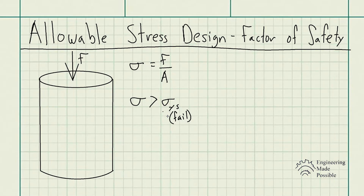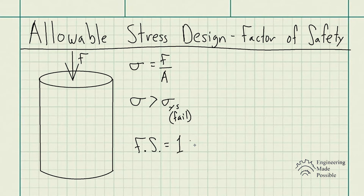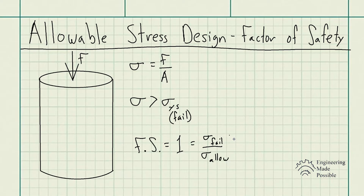As long as you're below the yield strength developed within the material, you should be fine. However, we have the factor of safety, FS. A factor of safety of one means the stress developed equals the yield strength. The factor of safety is the failure stress — the yield strength — divided by the allowable stress. We want FS greater than one so the stress doesn't come close to the yield strength.